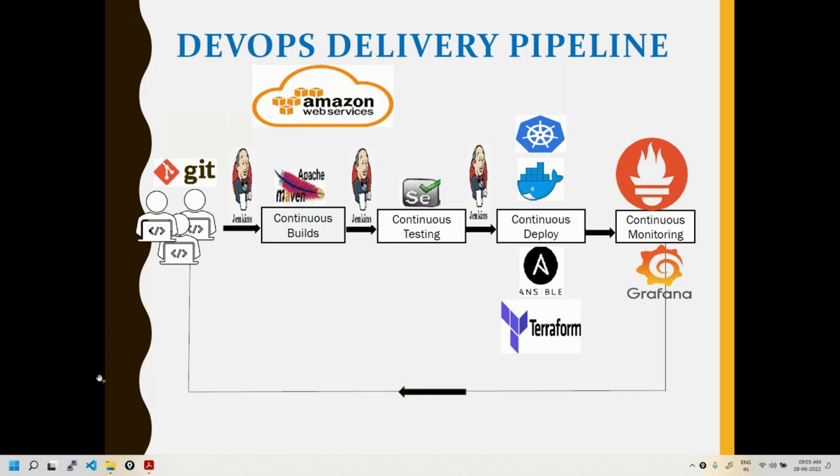The AWS DevOps certification is a certification for AWS — it's a different thing. Here we're talking about DevOps methodology, for which there is no separate certification. You can take tool-specific certifications — Git, Docker, Kubernetes each separately. The AWS certification tests you on AWS services used for DevOps.